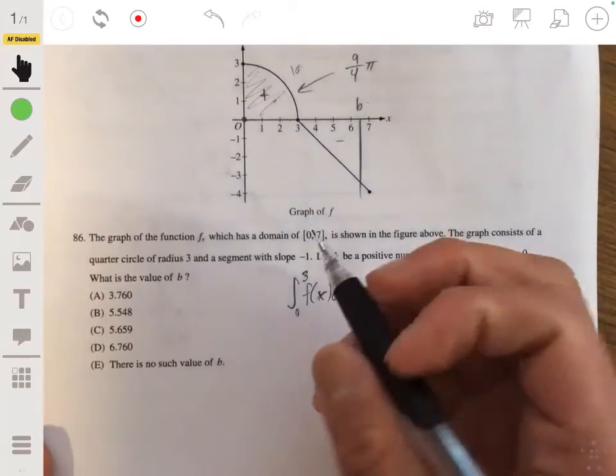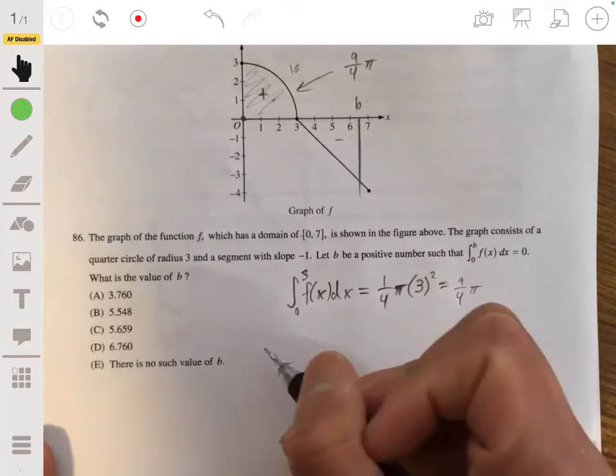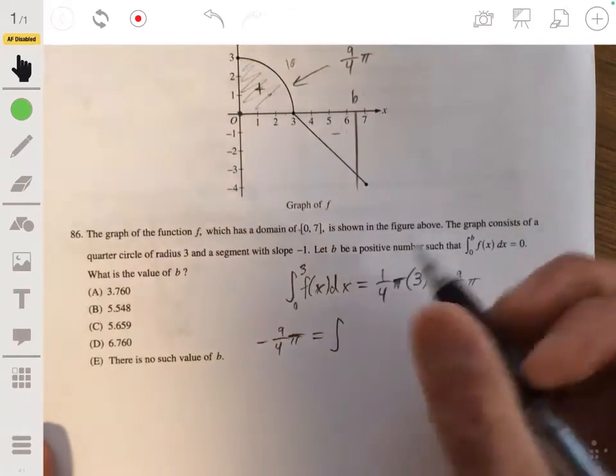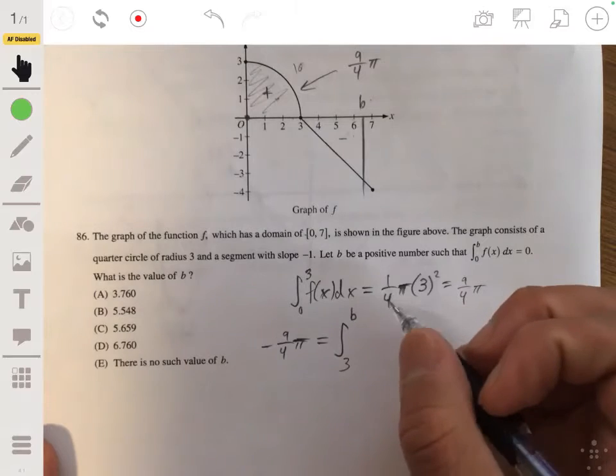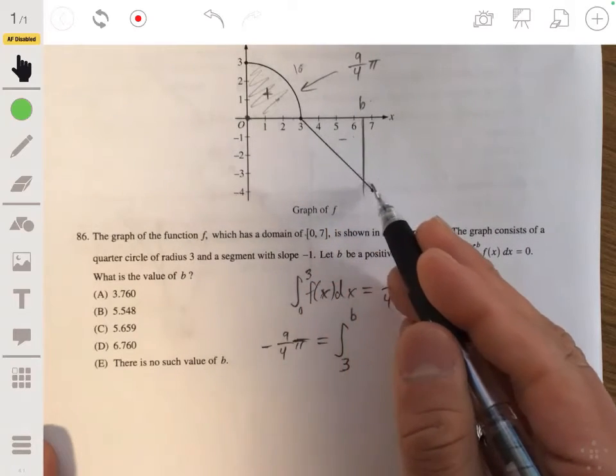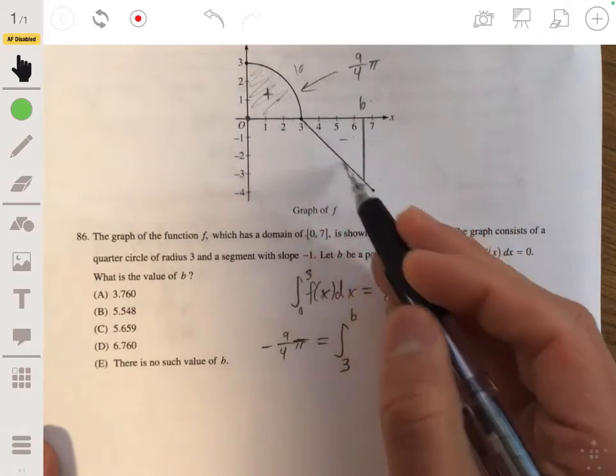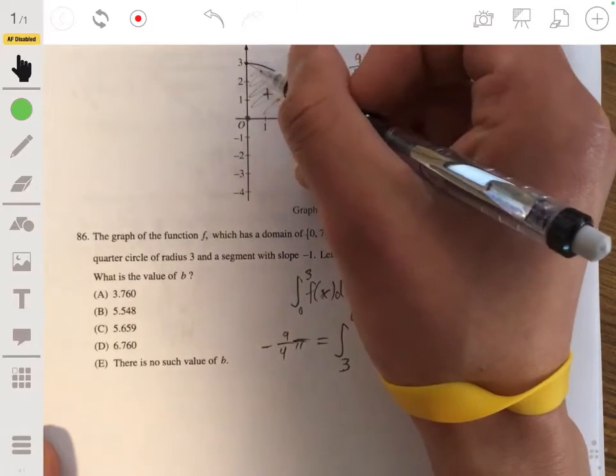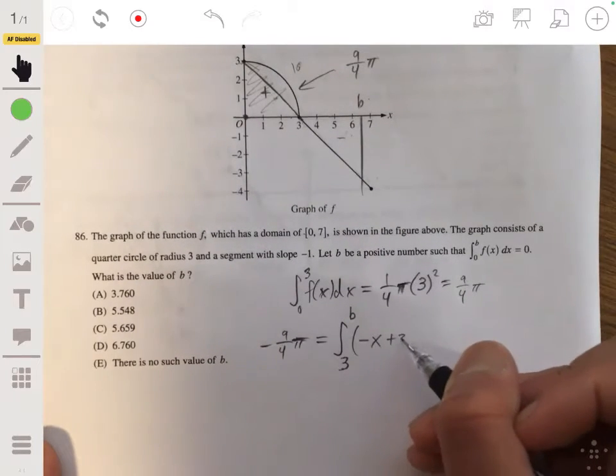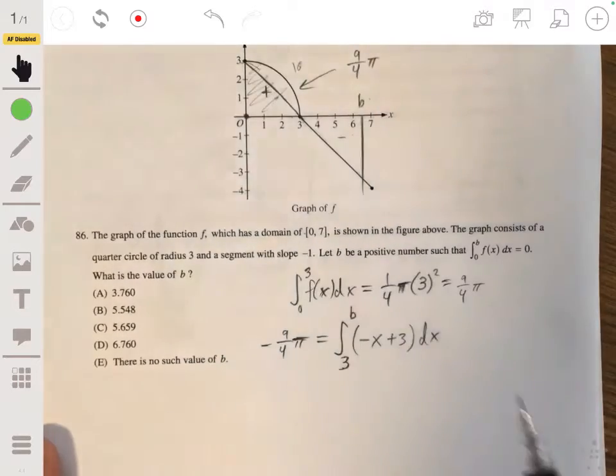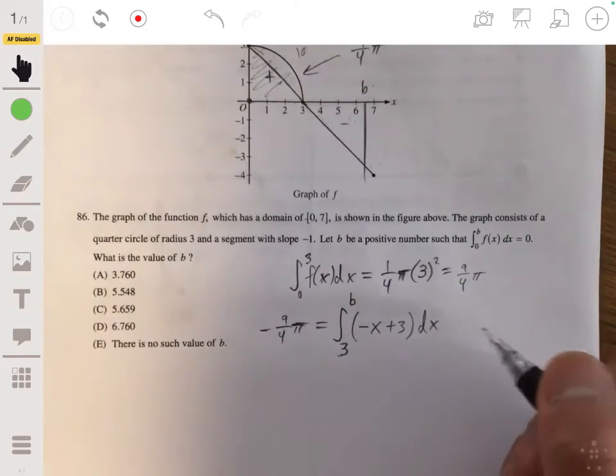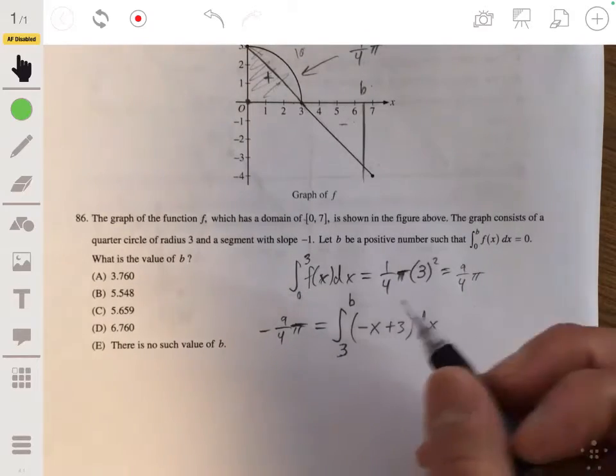So we have to then solve the integral that will be equal to negative 9/4 pi. So we set negative 9/4 pi equal to the integral starting at 3 up to b of this equation. So this equation has a slope of negative 1, and since it has a slope of negative 1, its y intercept would be 3. So its equation would be negative x plus 3 dx. So we want to evaluate this integral so that we get this value.